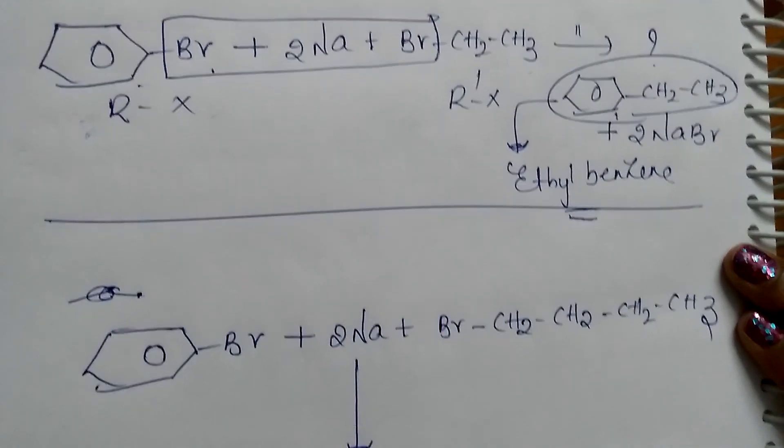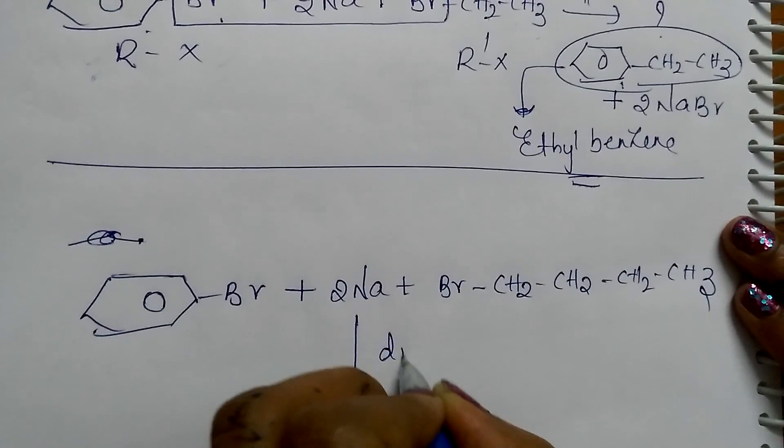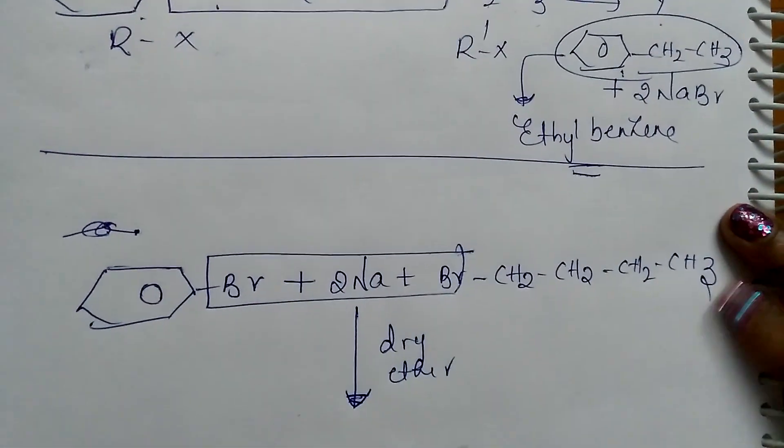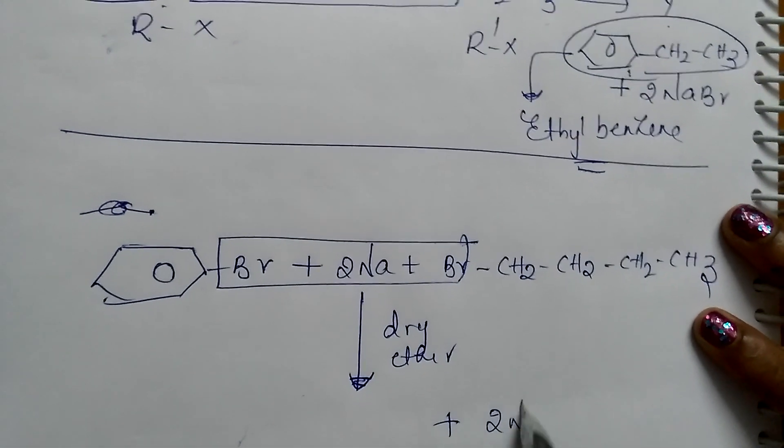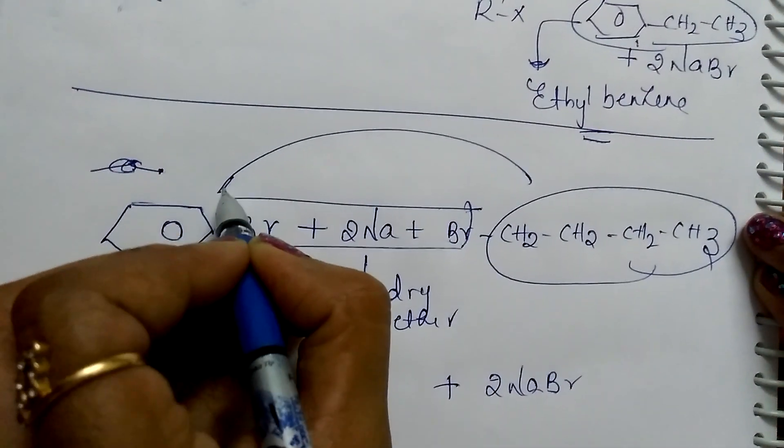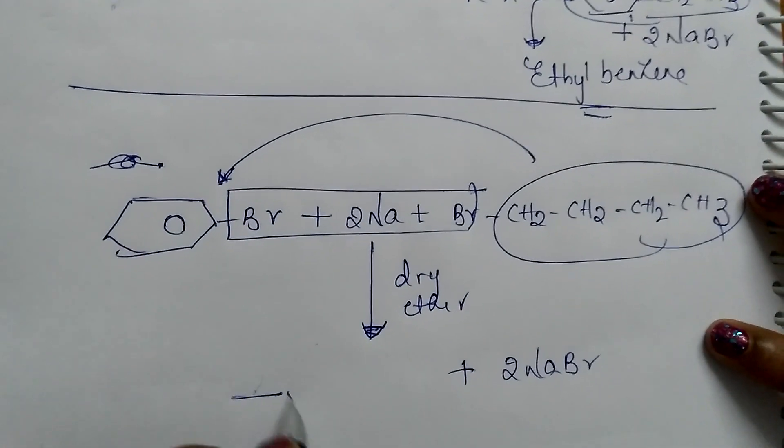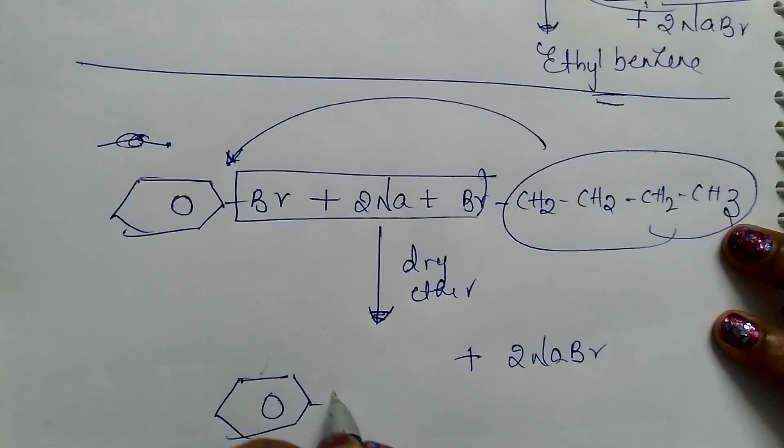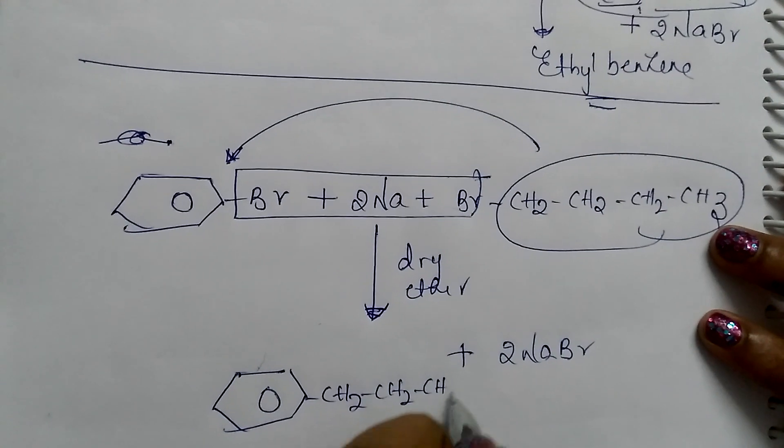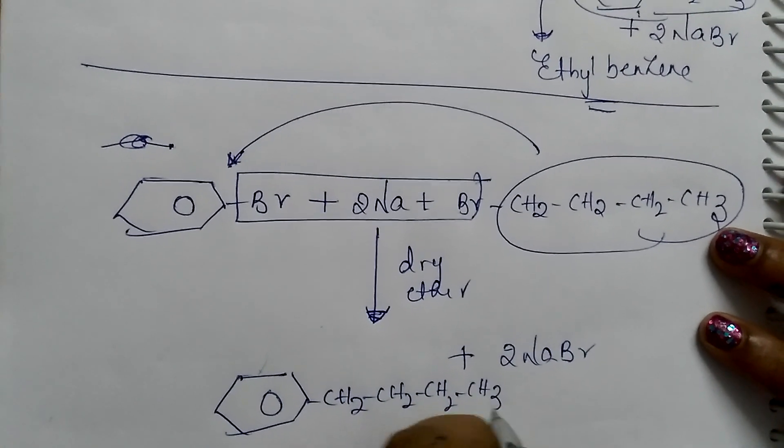Under the same conditions, dry ether and metallic sodium, NaBr is formed as a byproduct and this butyl group is easily introduced into the benzene ring through this reaction, the Wurtz-Fittig reaction. This way it is preferred when compared to the Friedel-Crafts reaction.